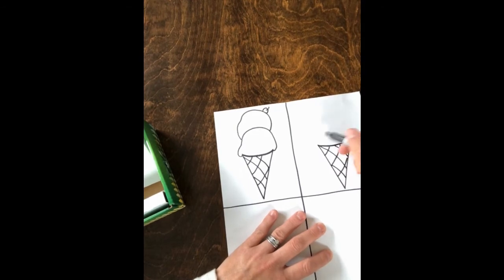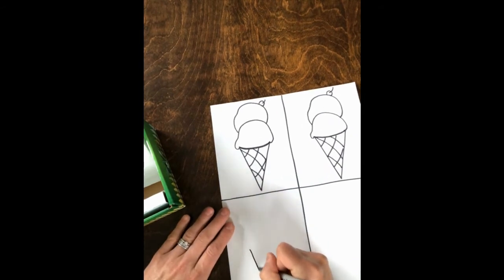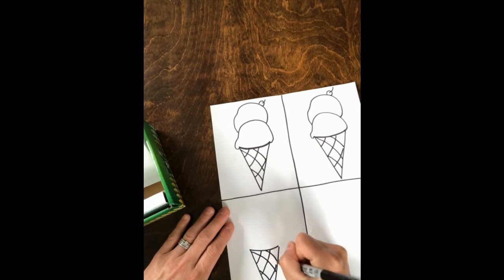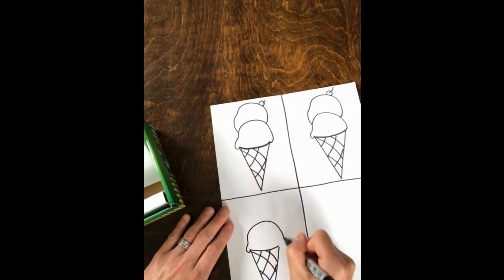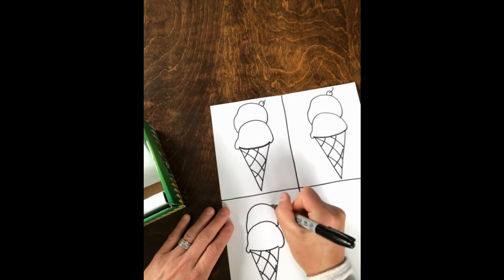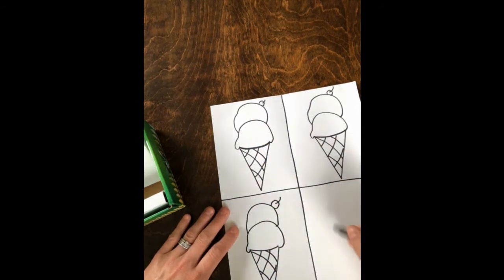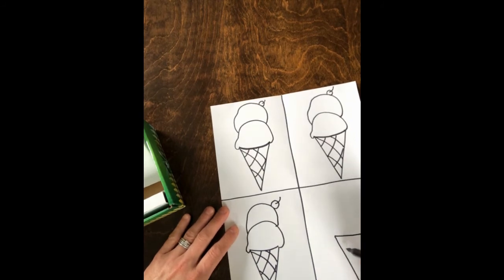Obviously each cone will be a little different because I'm not using a tracer or stencil, I'm just eyeballing it. So after you create your cones, if you want a little variety you could come in and add a different flavor of ice cream, whether you want to create some details that can be colored in or when you go in and start coloring.